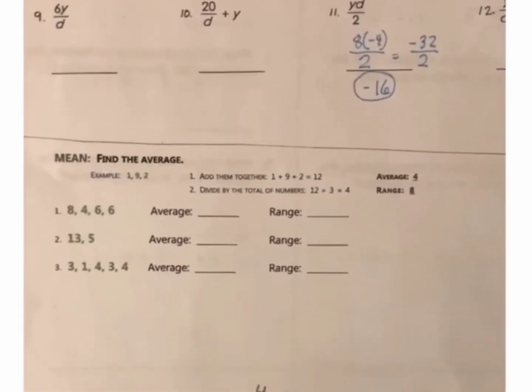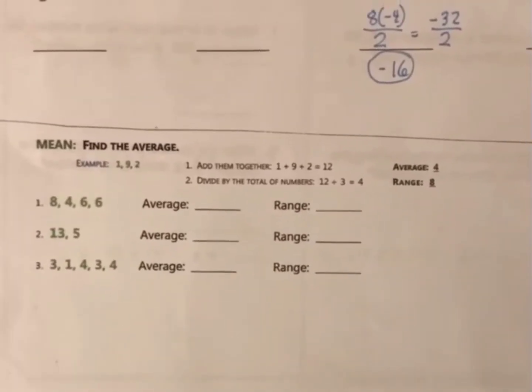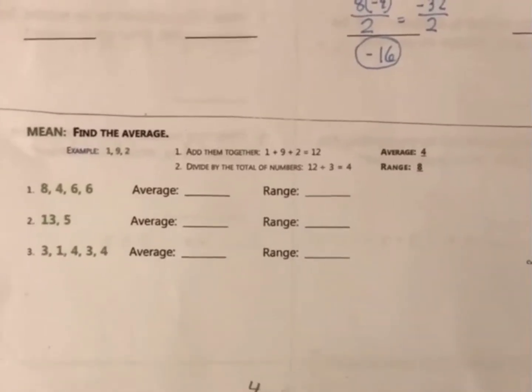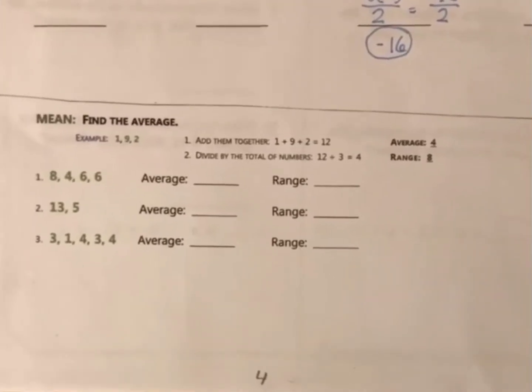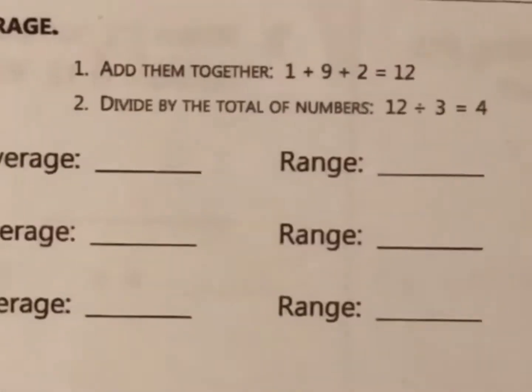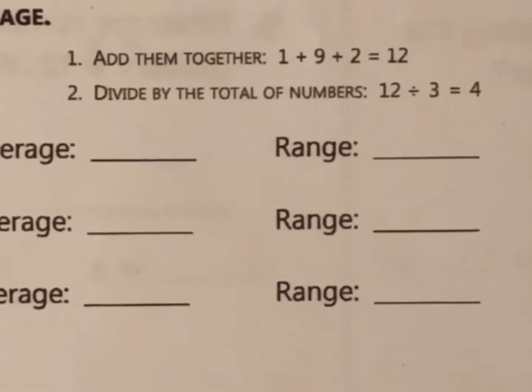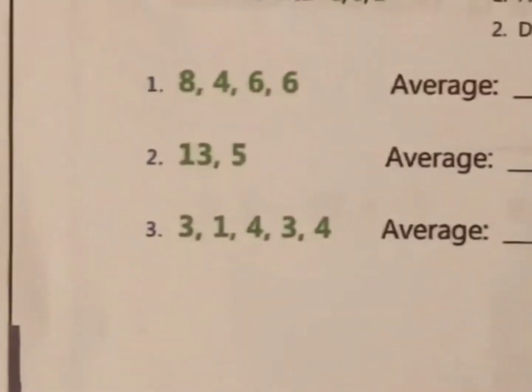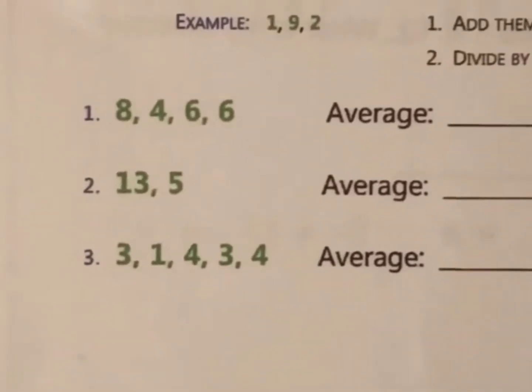Look down to the part where you're finding the average. The directions are just a little bit confusing, a little misleading, and I want to clarify that. So you're going to find the average and the range for both groups of numbers. To find the average, these are the two steps for finding the average, in case you've forgotten. You add them together, and then you divide by the total of numbers. So, for example, add them together, 8 plus 4 plus 6 plus 6.